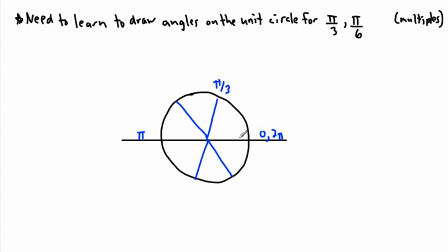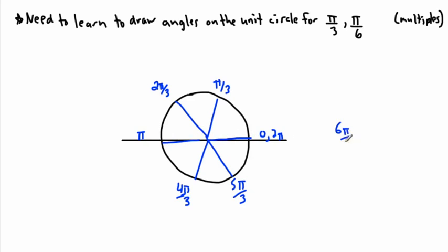If that's one pi over three, then we start counting the multiples. The next one is two pi over three, then three pi over three — which reduces to pi. That means this must be four pi over three, then five pi over three, and lastly six pi over three, which reduces: six over three is just two, so we get two pi. Good.